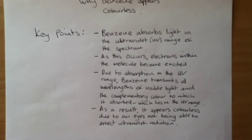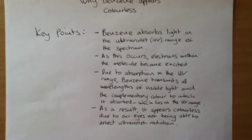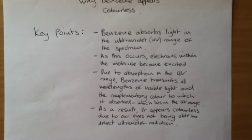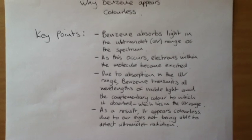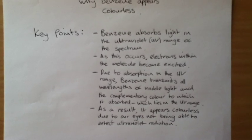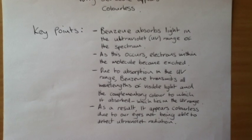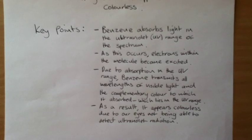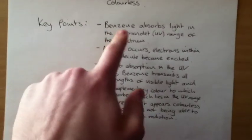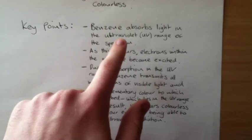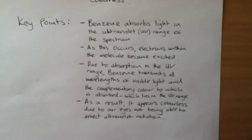But the points in front will guarantee you three or four marks in a question because these are the key points that you always have to put about why benzene appears colourless. And the main reason is because it absorbs light in the ultraviolet range of the spectrum.